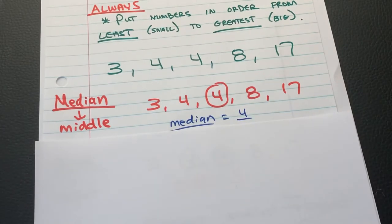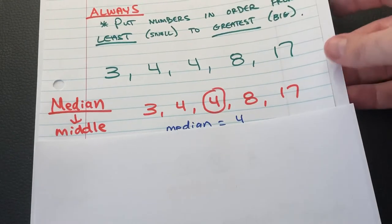Now, you might get a tricky one where you might have two numbers that are tied for the middle. Next time, I'll tell you what to do. For your assignment today, none of them are going to be like that.